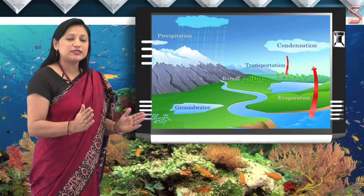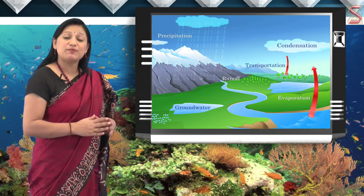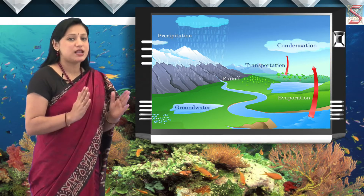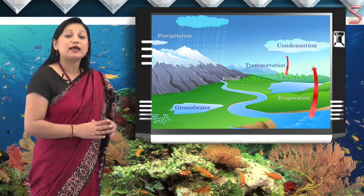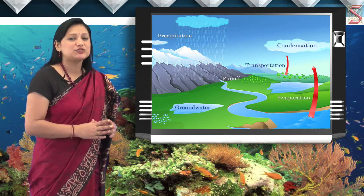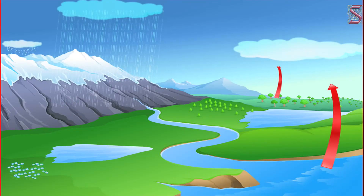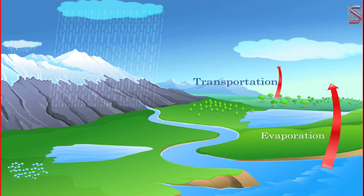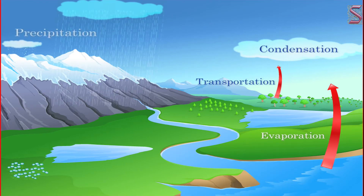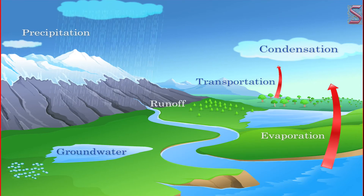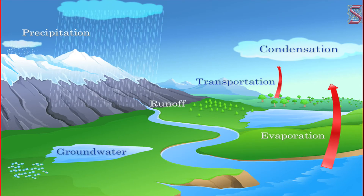The hydrological cycle is made of a total of six stages. Now, let us have a look at the six stages of the water cycle: evaporation, transportation, condensation, precipitation, runoff, and groundwater.